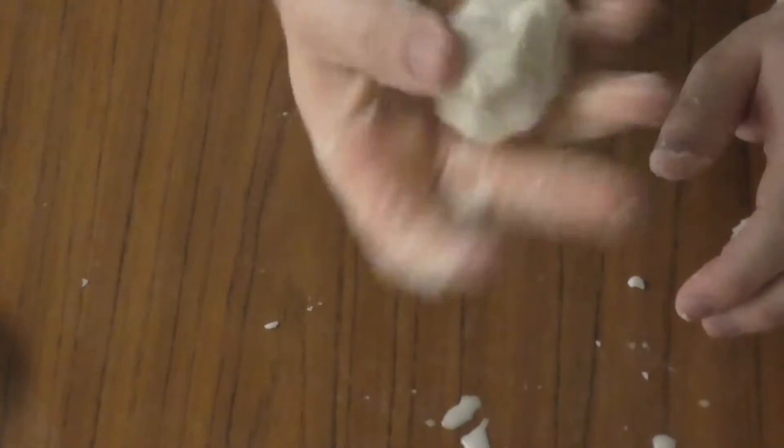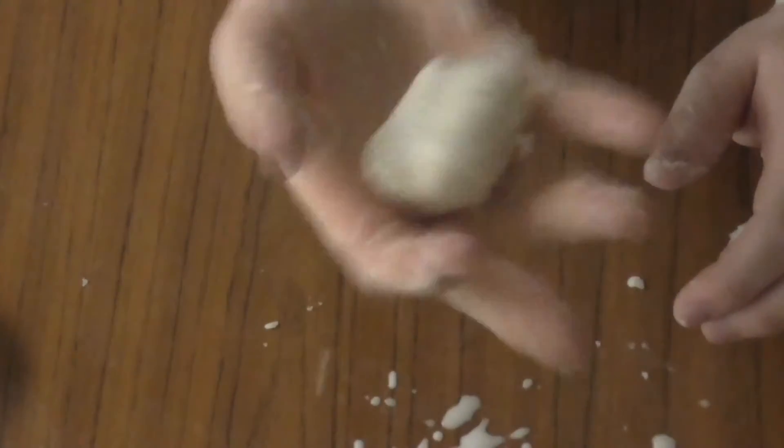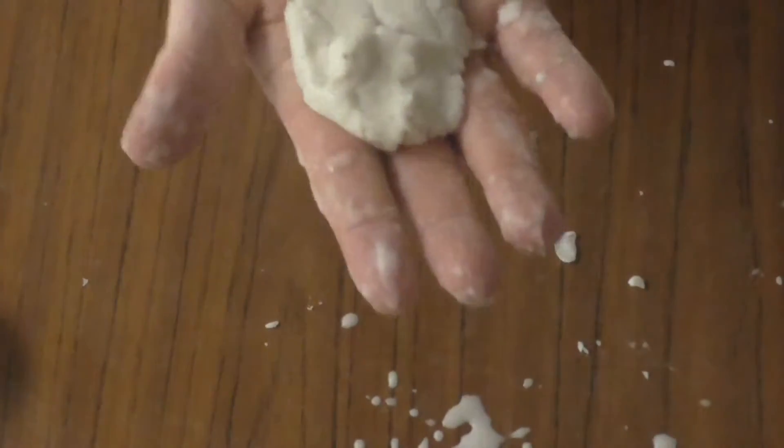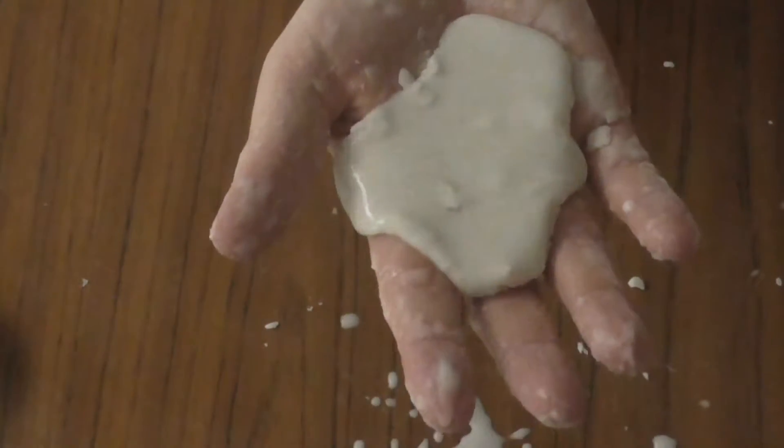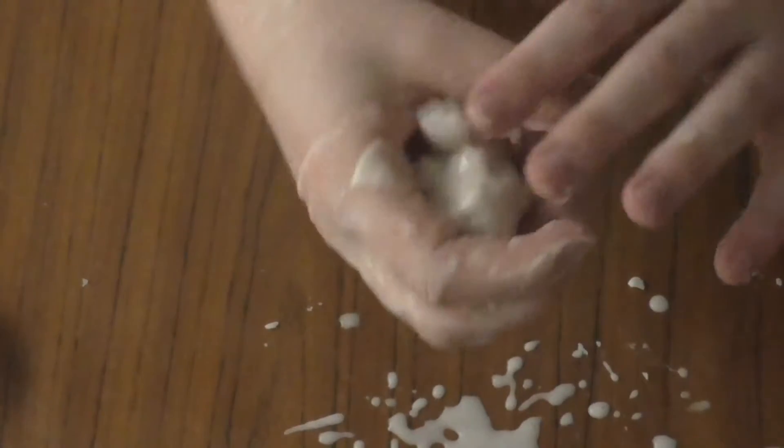So the more amount of stress, the more amount of force you put on it, the higher the viscosity comes and it turns into some kind of a hard substance or a solid substance. But when you put away the stress and you don't put force on it, it starts to become a liquid again.